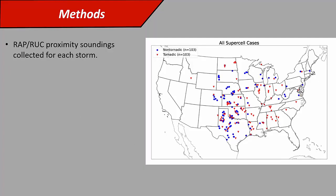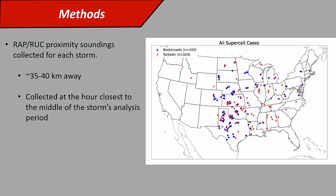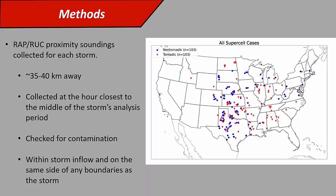To get the environmental variables, we got proximity soundings from the RAP or RUC for each storm. We tried to put these about 35 to 40 kilometers away, guided by other research people have done looking at proximity soundings. Thompson et al. have a paper from 2010 where they found that's kind of the Goldilocks range for looking at these parameters. We collected these at the hour closest to the middle of each storm's analysis period. We made sure they weren't contaminated soundings and that they're on the same side of any mesoscale boundaries as the storm, so we're actually sampling storm inflow.